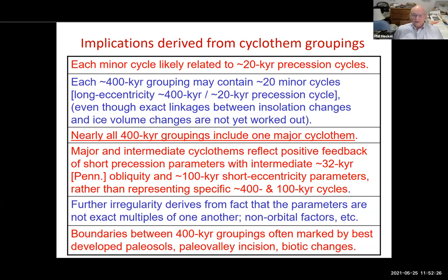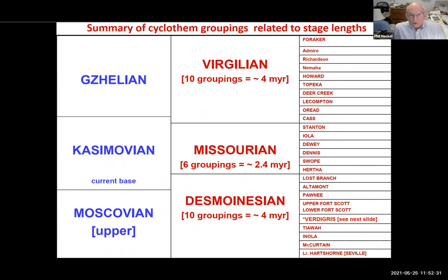Based on the mid-continent names, the Virgilian included 10 groupings — 4.0 million years estimated. The Missourian: 6 groupings, 2.4 million years. The Desmoinesian: 10 groupings, 4 million years. Note that about the middle of the Desmoinesian, the Verdigris cyclothem is starred.